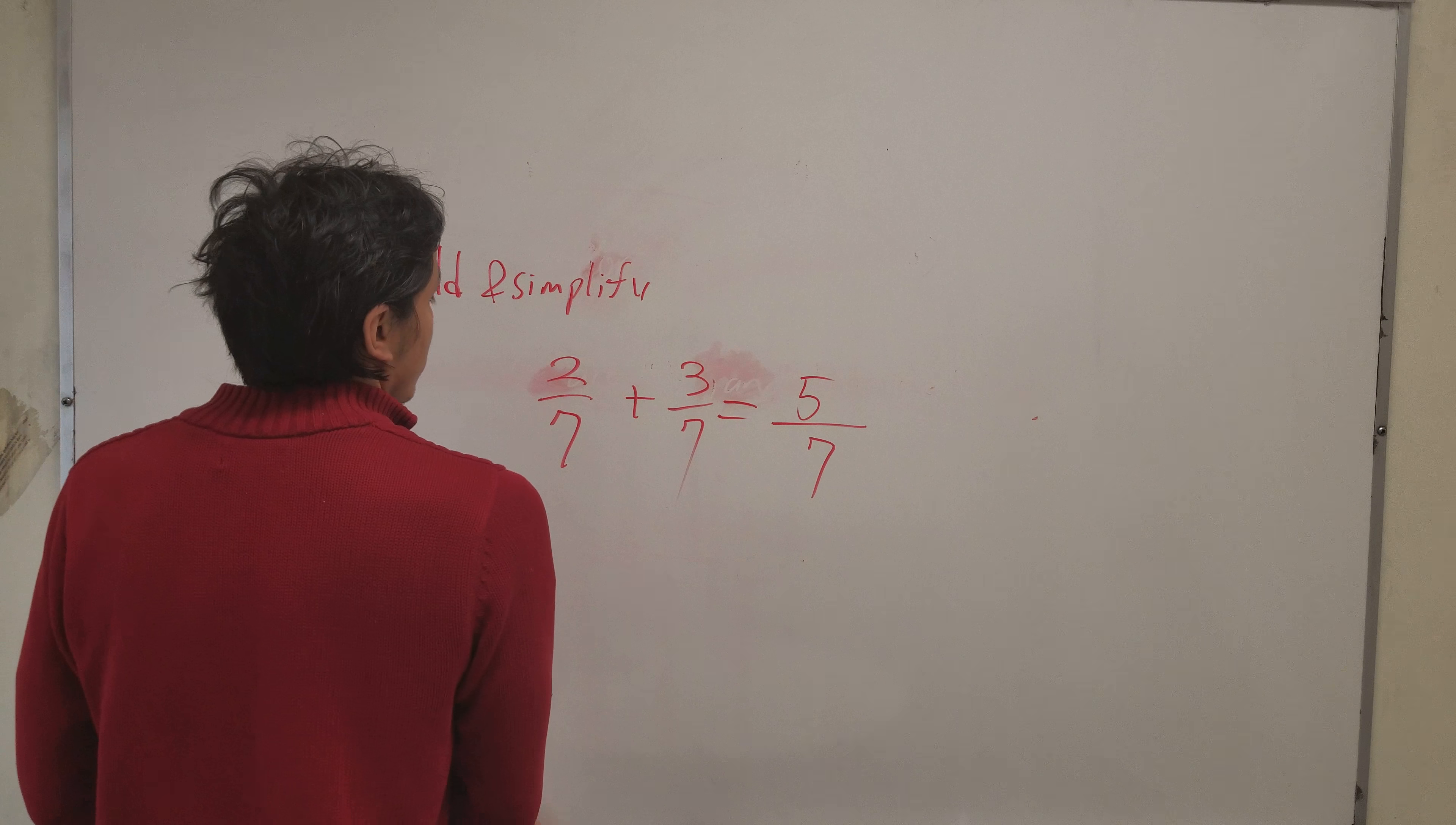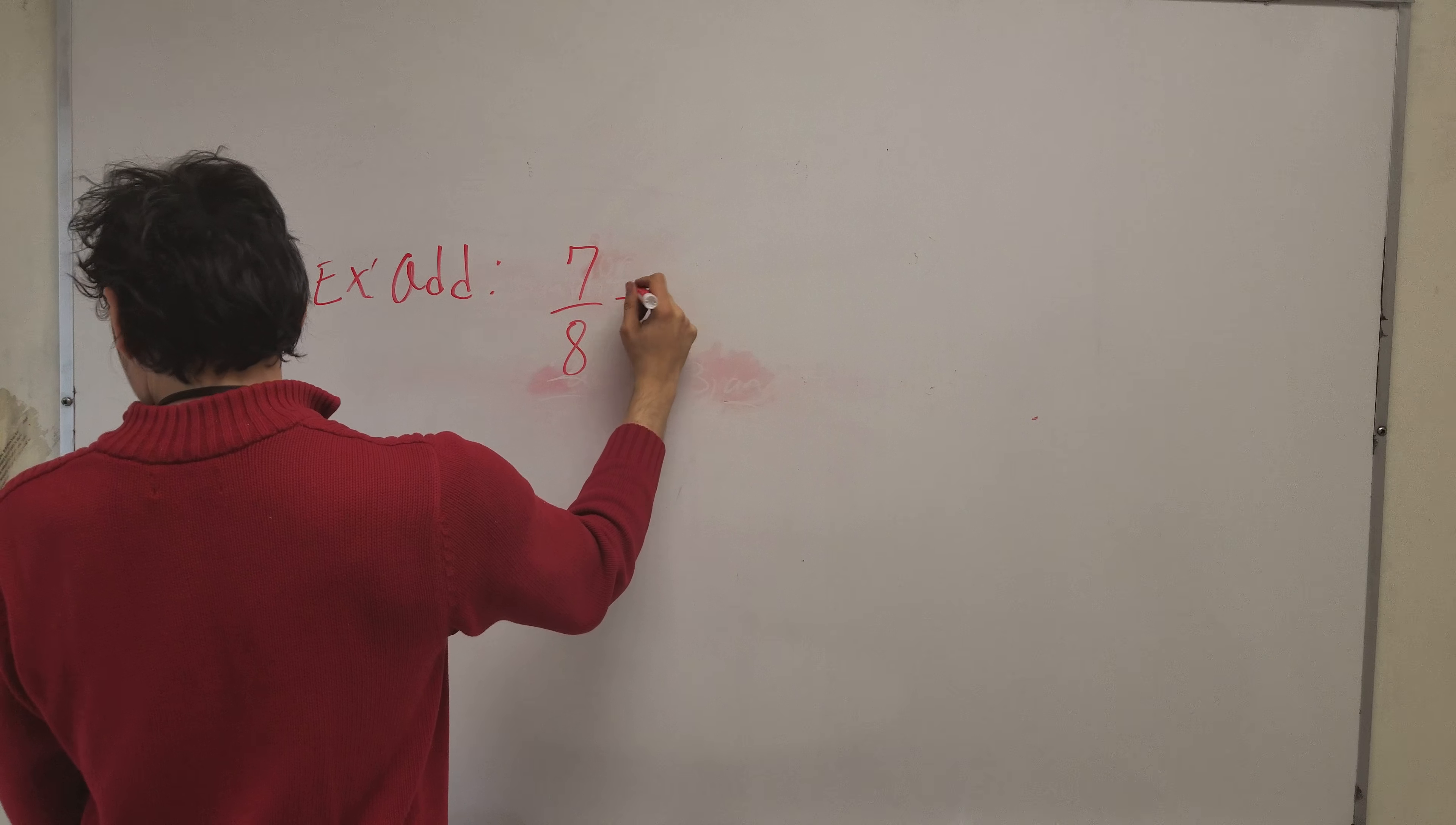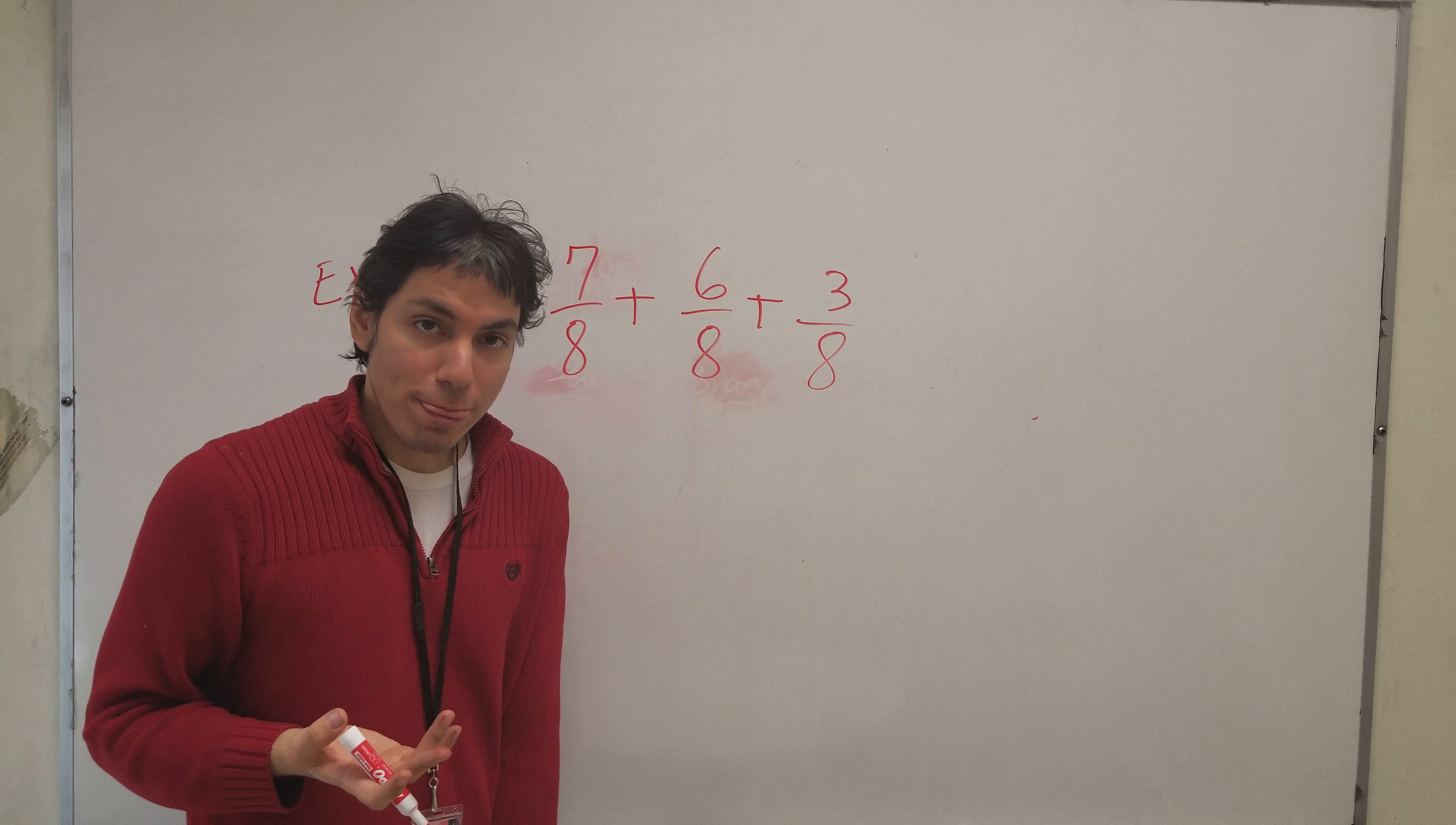Well what about a problem that's a little bit different, a little bit more challenging. Let's say it says add seven over eight plus six over eight plus three over eight. Now we have three different denominators. Three denominators are the same, but there's three fractions, okay?